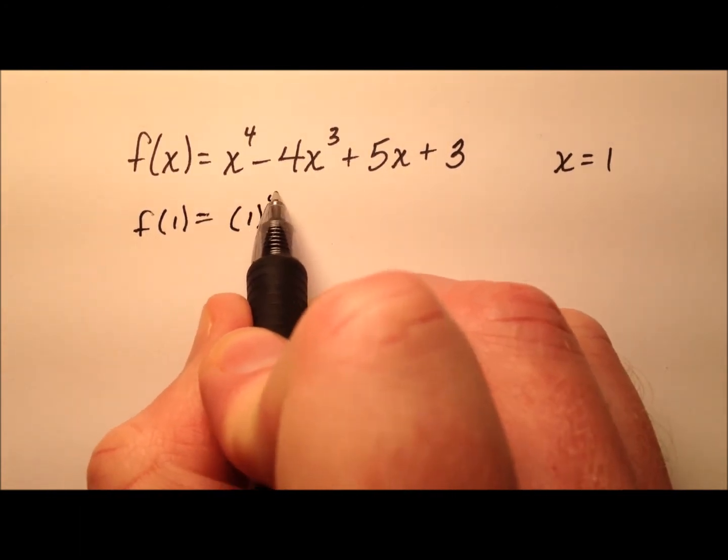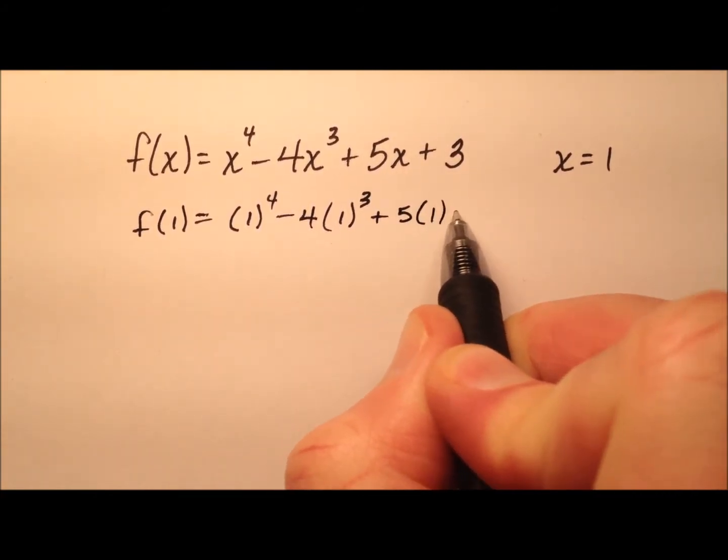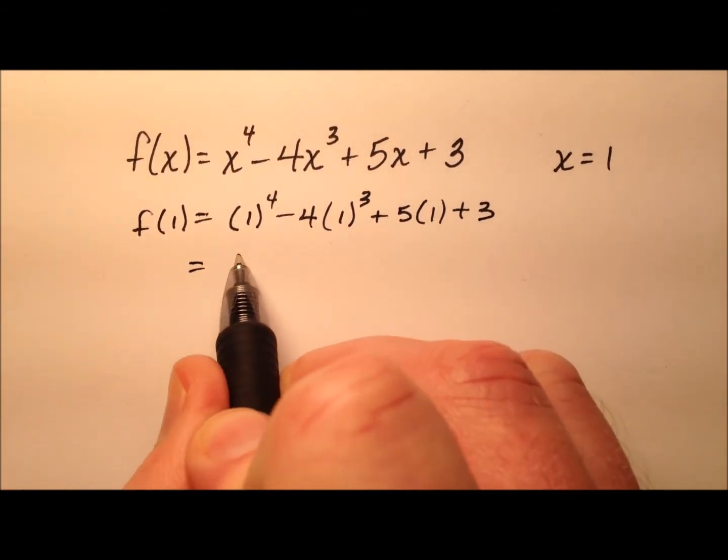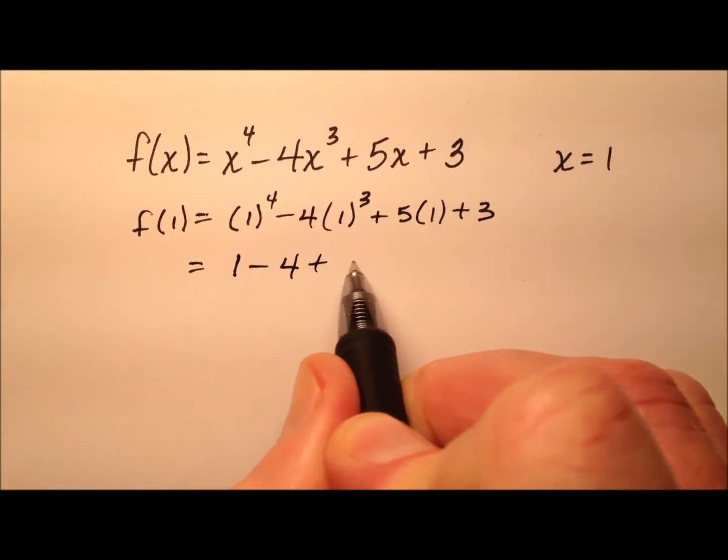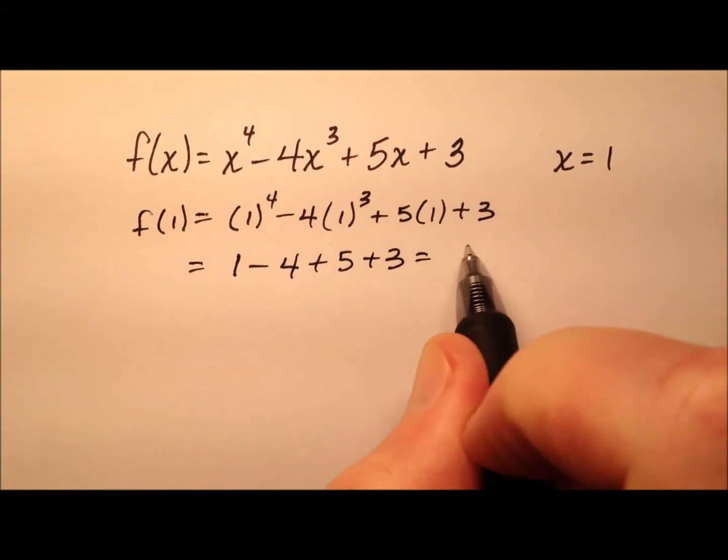So 1 to the power of 4 minus 4 times 1 to the power of 3 plus 5 times 1 plus 3. So f at 1 will be 1 minus 4 plus 5 plus 3, and that looks like it's going to be 5.